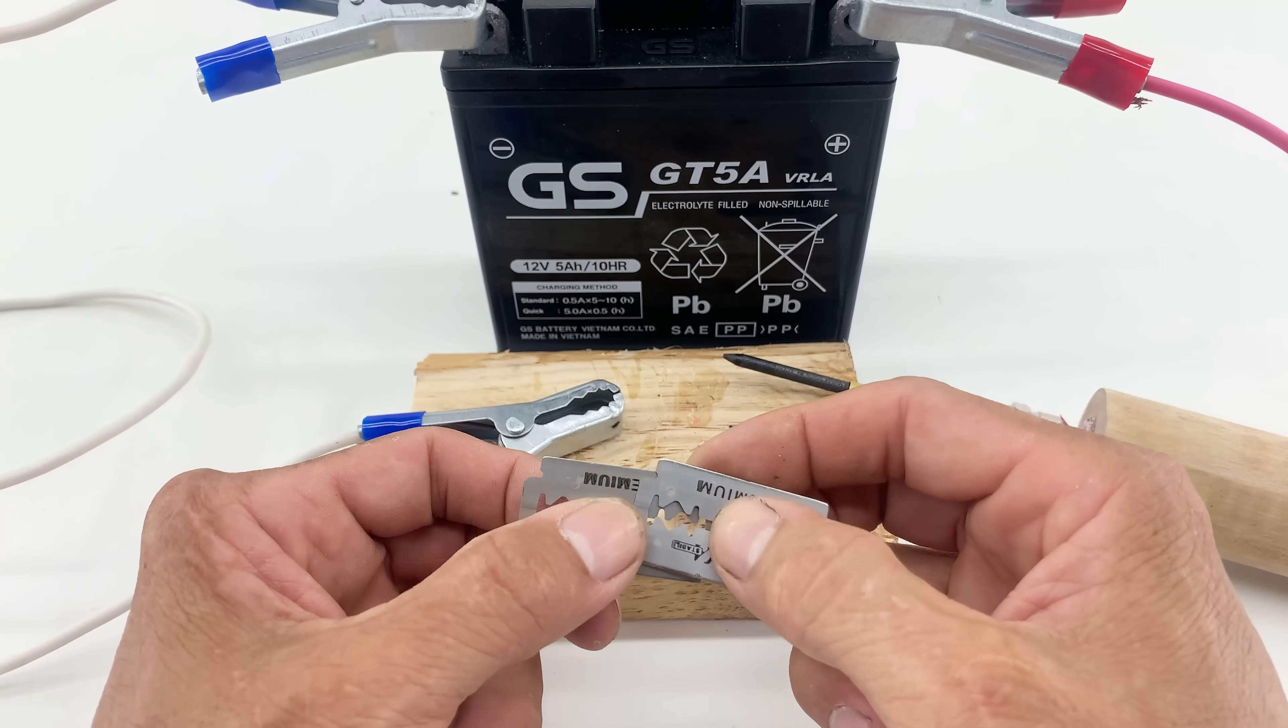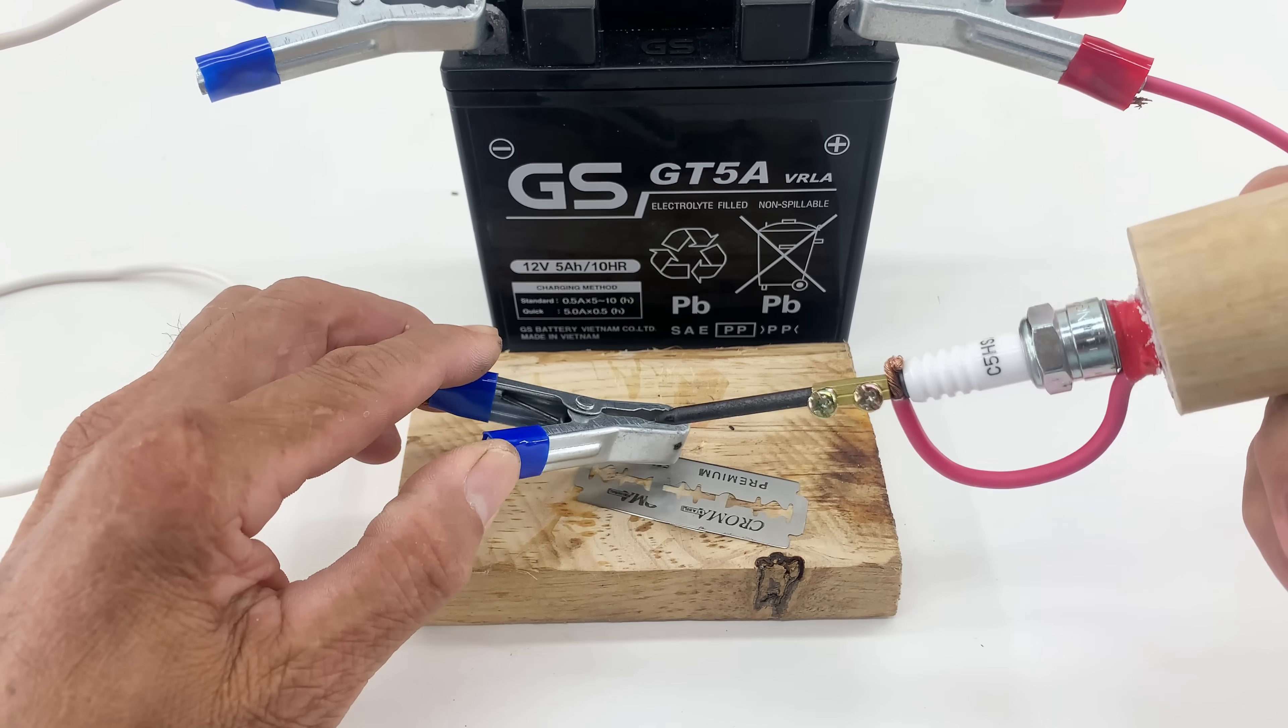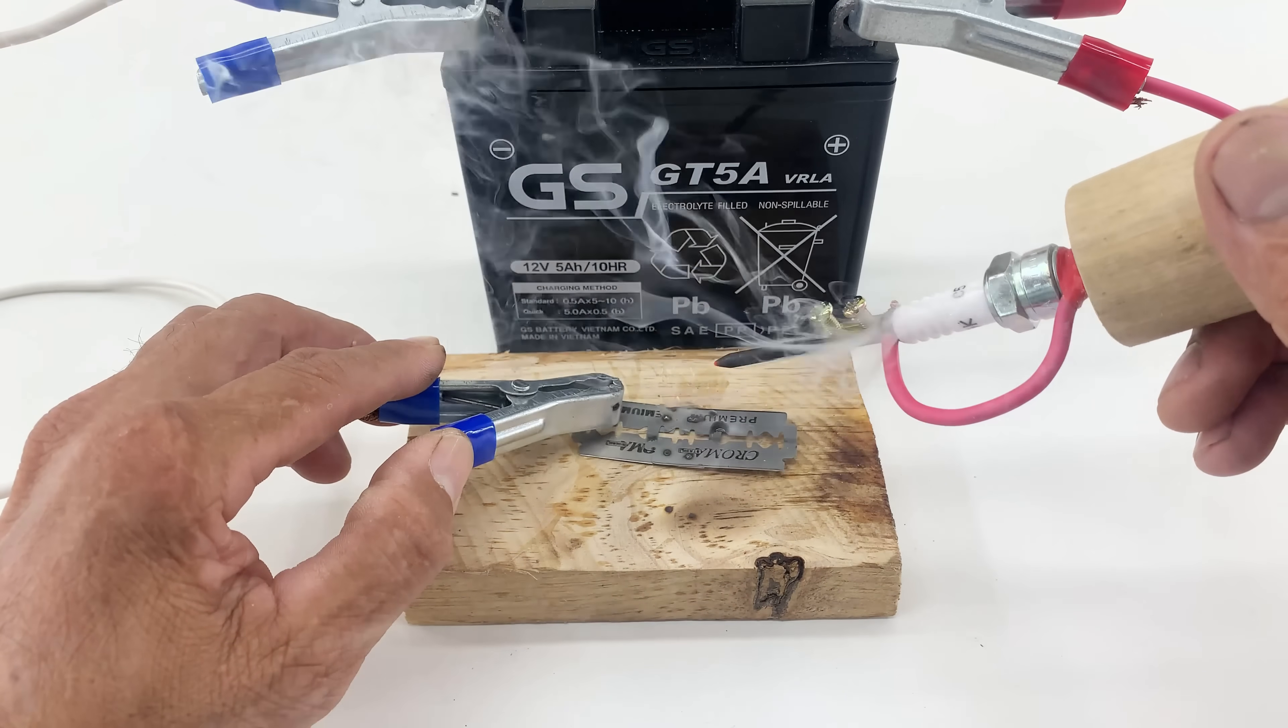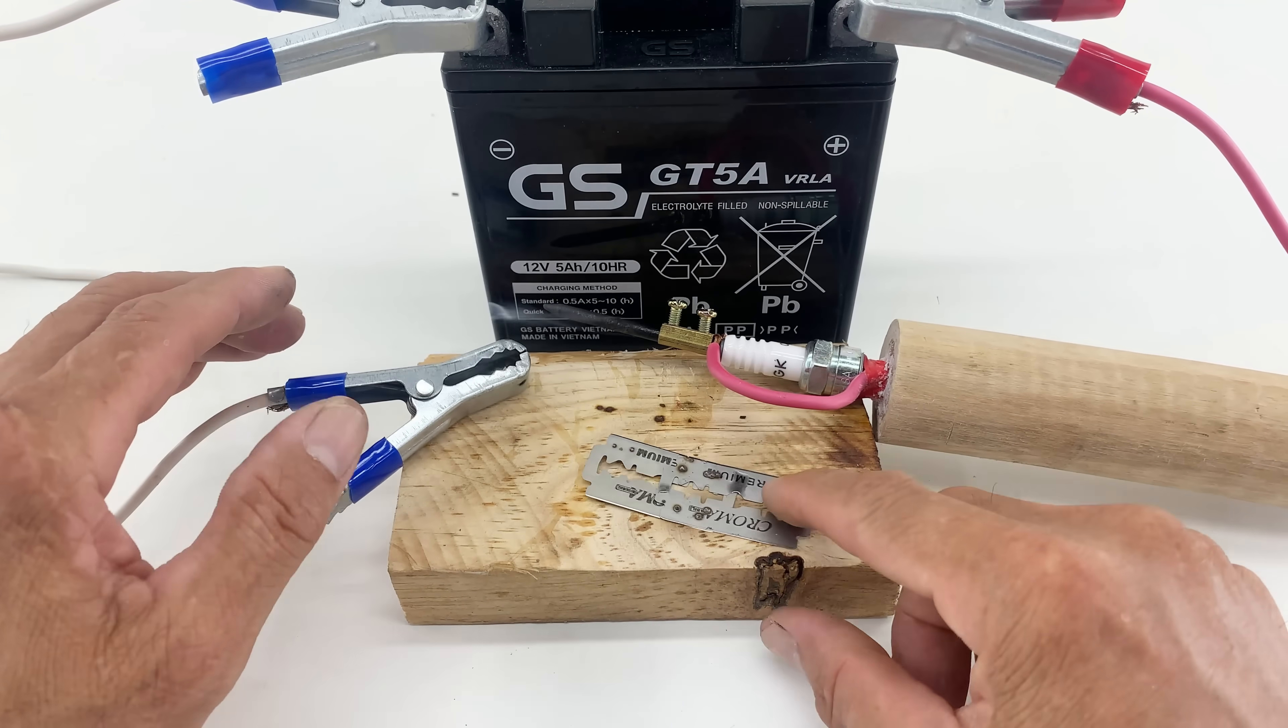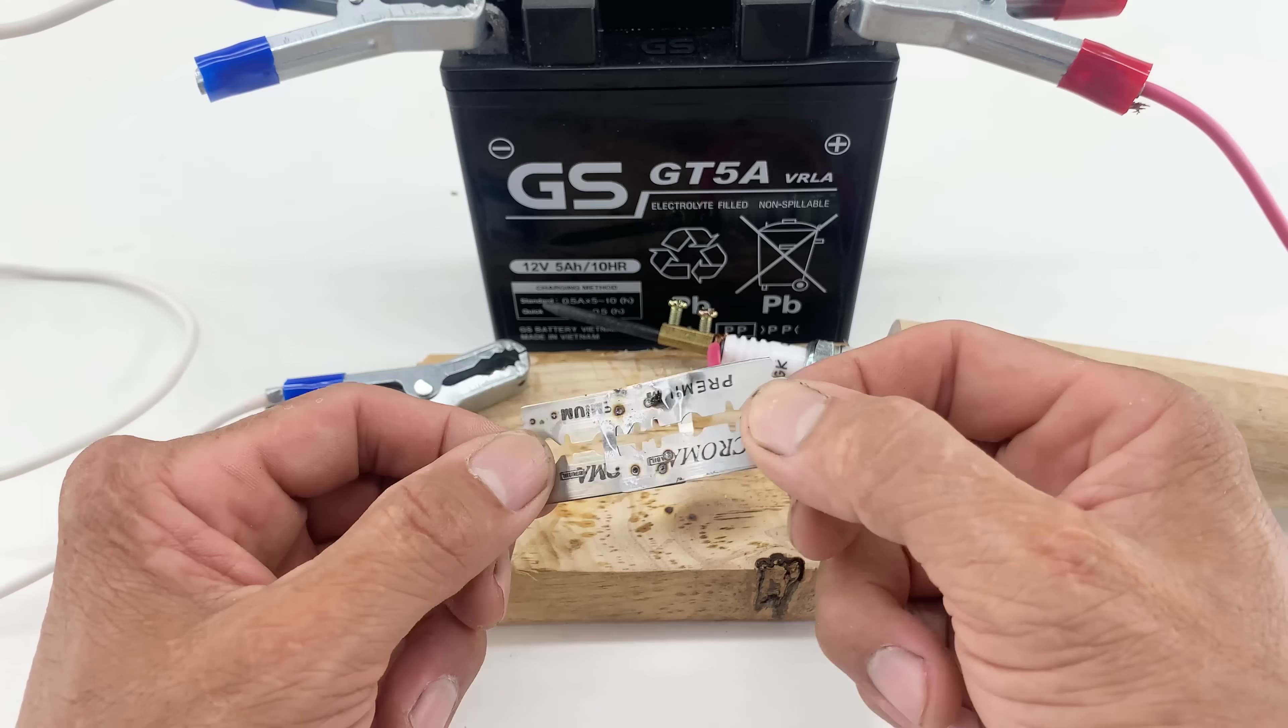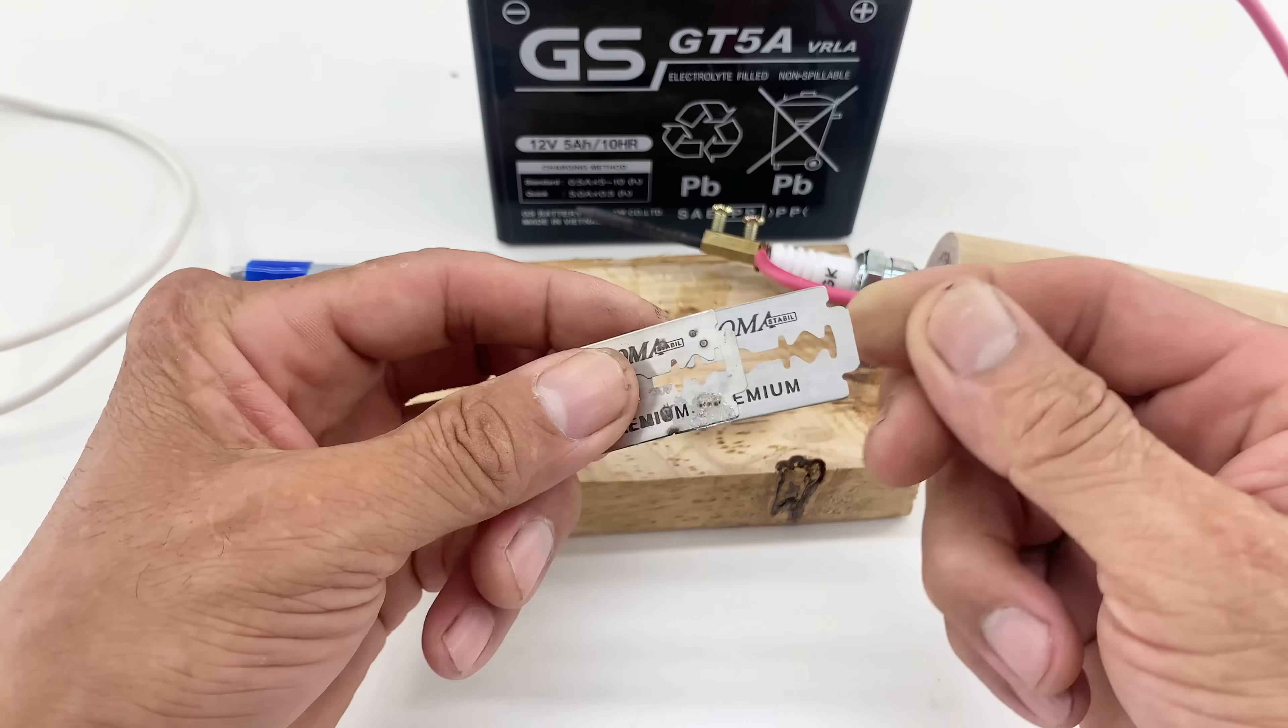I've placed two razor blades on a piece of wood for our demonstration. Watch closely as I bring the sharpened carbon tip of our spark plug soldering iron into contact with the metal. See how quickly it begins to heat up and glow? This is the power of concentrated current. The heat generated is intense enough to melt the razor blade almost instantly, showcasing the effectiveness of this simple DIY tool for high heat tasks. Imagine the possibilities for small metalwork or repairs.